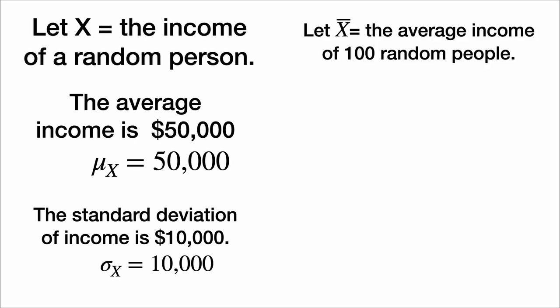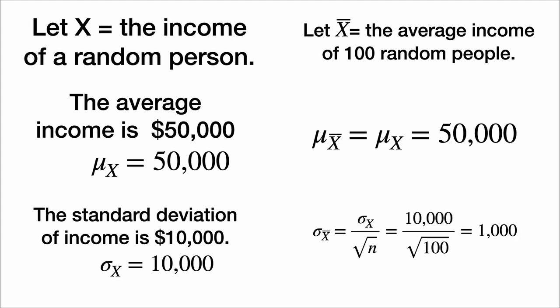But let's take a look at x̄. Let's let x̄ be the average income of 100 random people. The mean of x̄ is still $50,000. When I take 100 random people, I expect their average income to be $50,000. But again, the standard deviation is less. Because there's more people, there's less variation in their average income. The standard deviation of x̄ is 10,000 over the square root of n, which is 100, so the standard deviation is $1,000.